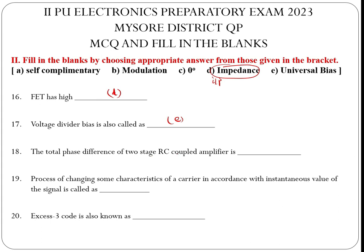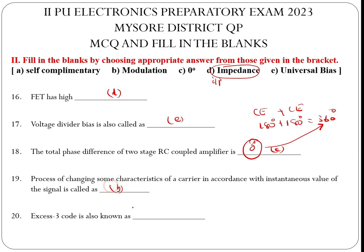The total phase difference of a two-stage RC coupled amplifier is zero. Because an RC coupled amplifier consists of two CE amplifiers — each produces 180 degrees, so together there is 360 degrees of phase shift, which means they are in phase, i.e., zero degrees. That is option C. The process of changing some characteristics of a carrier in accordance with the signal is modulation — a repeated question.